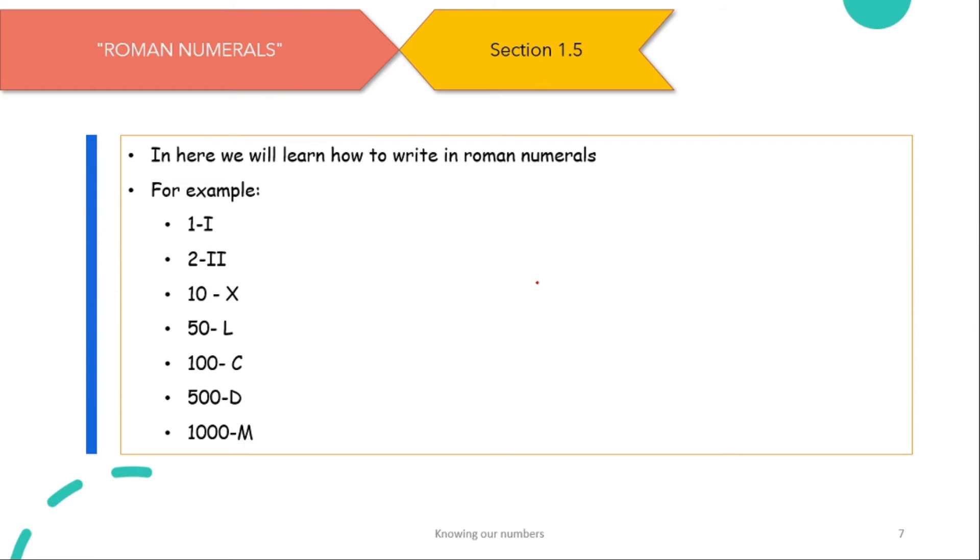Roman numerals. In here we will learn how to write in Roman numerals. So this is how we write 1, 2, and I'll show you how to write 3. Something like 1, 2, and 3. So that's how we write 3. And I'm going to show you how we write 5. This is how we write 5. And this is how we write 4. And if you move the line to the right side of V, it becomes 6. And if you add another one, it becomes 7. One more, 8.